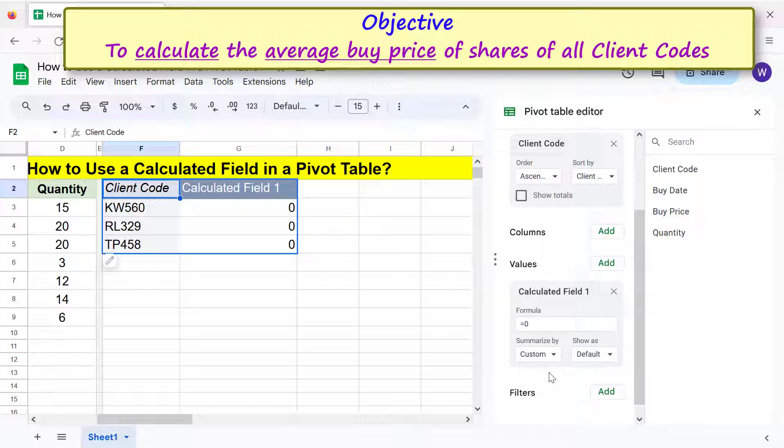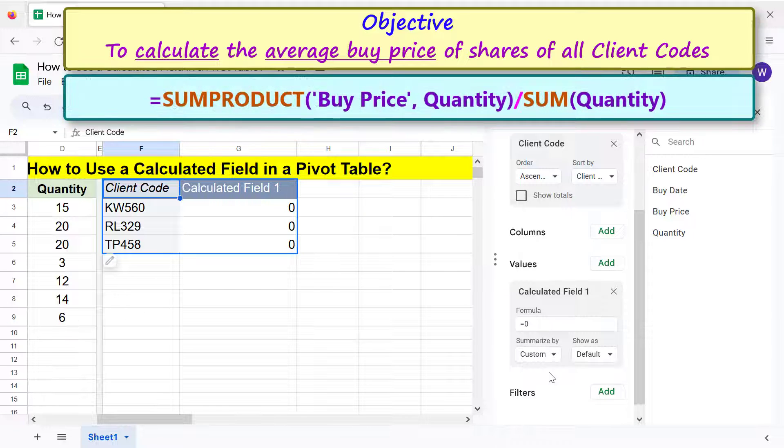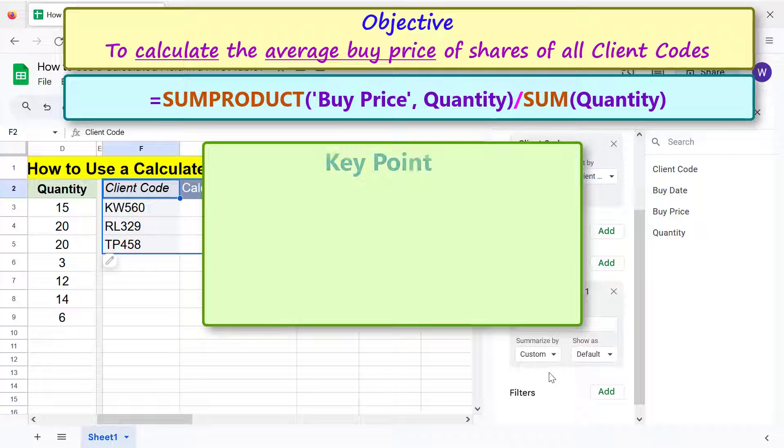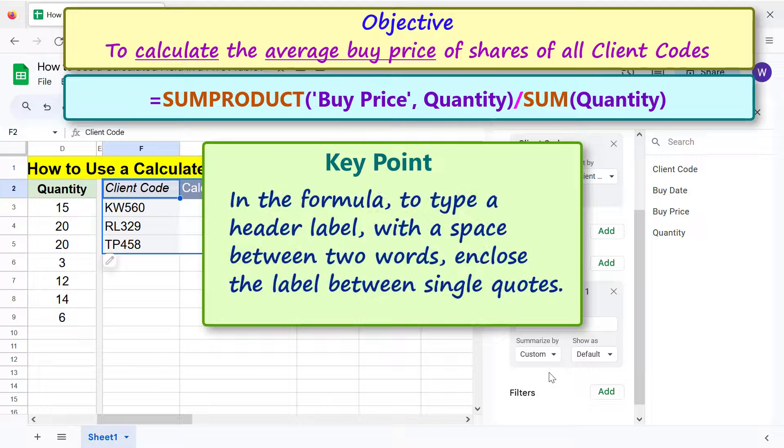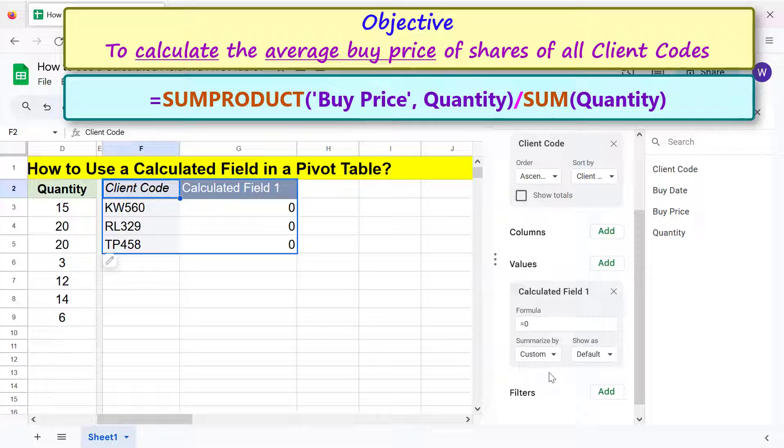To calculate the average buy price of shares, I will use SUMPRODUCT and SUM functions. The formula is: equals SUMPRODUCT Buy Price comma Quantity divided by SUM Quantity. Key point: in the formula, to type a header label with a space between two words, enclose the label between single quotes. I will type the formula in the calculated field and press Enter.